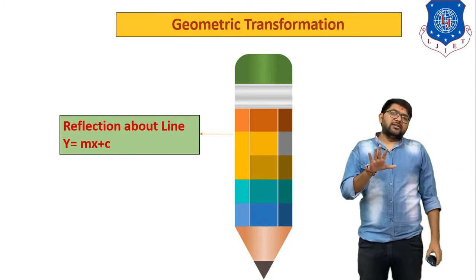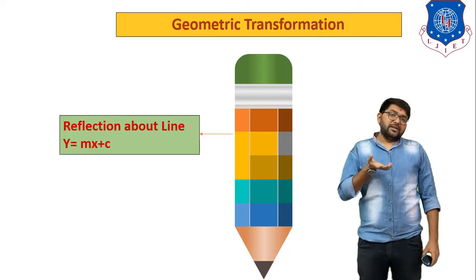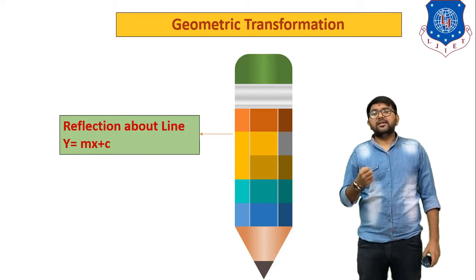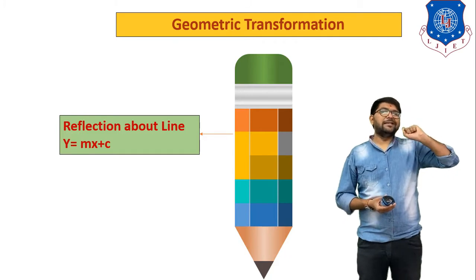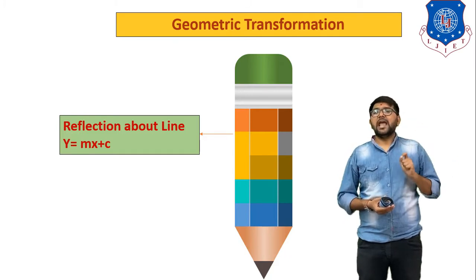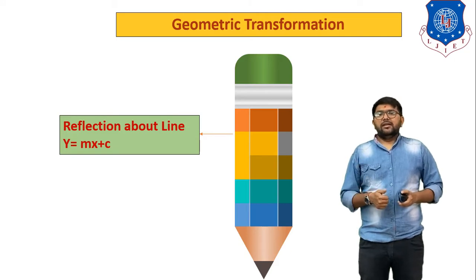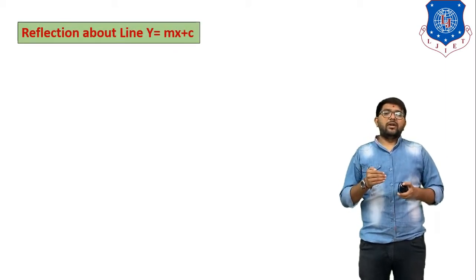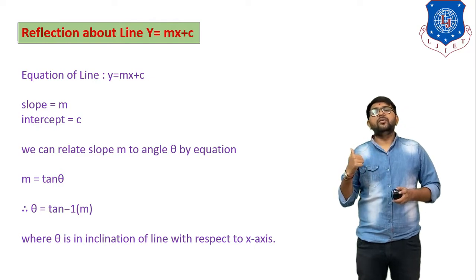We already discussed and derived the equation for reflection about the x-axis and how to find reflection about the y-axis. In today's session we have to learn how to find reflection about the line y equals mx plus c. In that equation, m indicates the slope of the line and c indicates the constant value — the y-intercept.